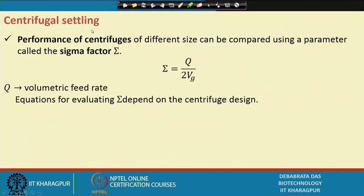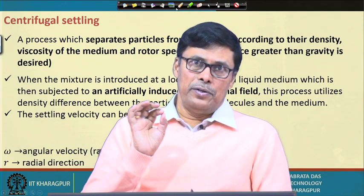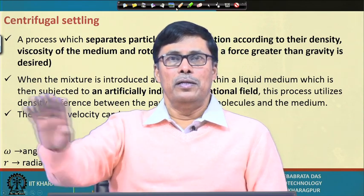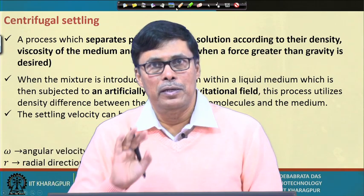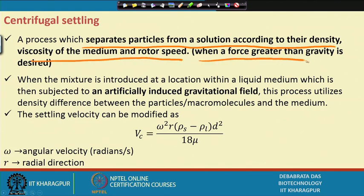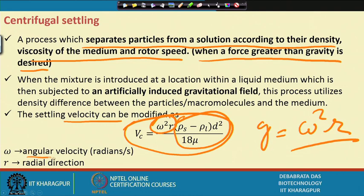In centrifugal settling, two types of forces act: centrifugal force towards the periphery and centripetal force towards the center. The solid particle is separated by centrifugal force. The settling velocity in centrifugation is defined as dc = ω²r × [ρ_s - ρ_L] × d² / 18μ, where the gravitational acceleration g is replaced by ω²r. Here ω is the angular velocity in radians per second and r is the radial distance.